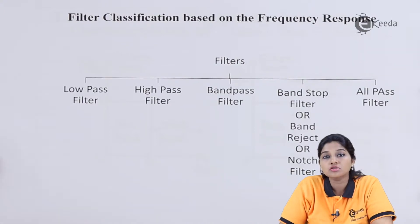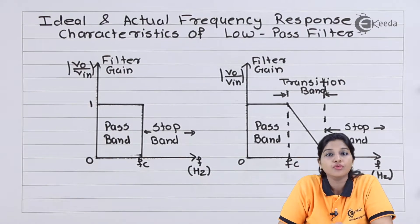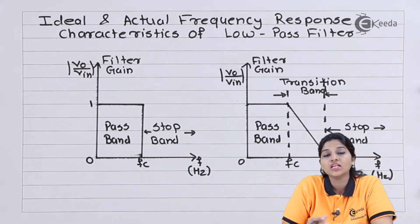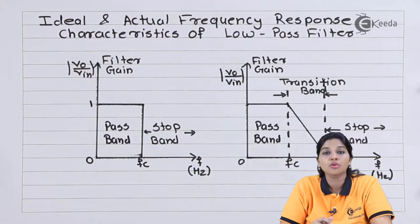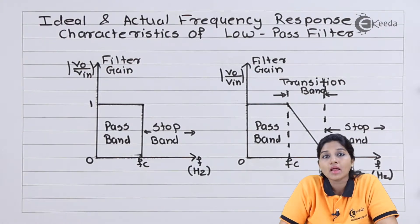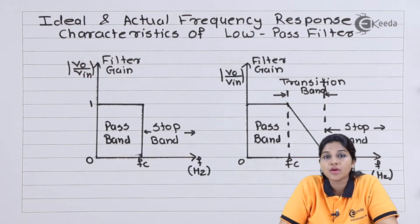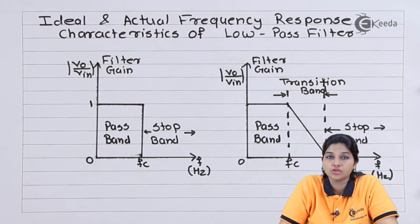Now let's see how the frequency response of all these filters looks. To understand the frequency response, we are going to consider ideal as well as practical frequency response. Because practically, it is not always possible to get the ideal frequency response, as certain parameters affect the value of output. As we are using op-amp along with passive components, the number of parameters affects various parameters of the op-amp. Because of that, ideal output is not possible, so we need to consider practical output also.